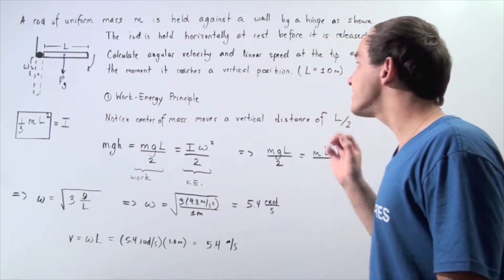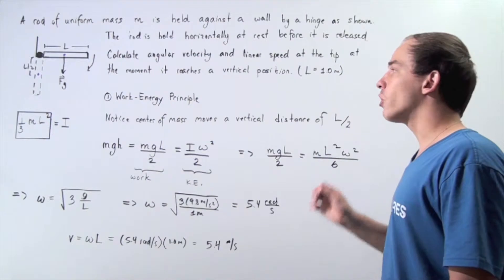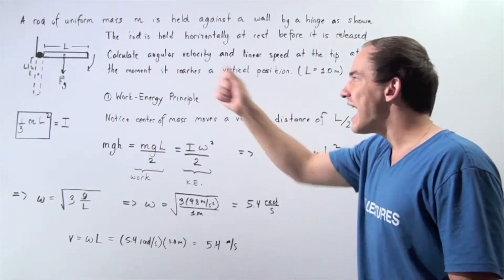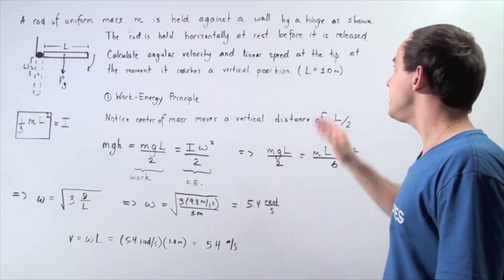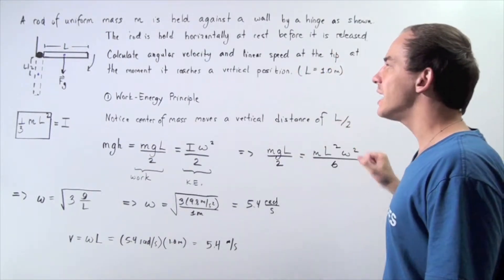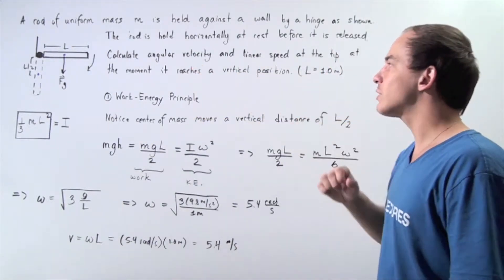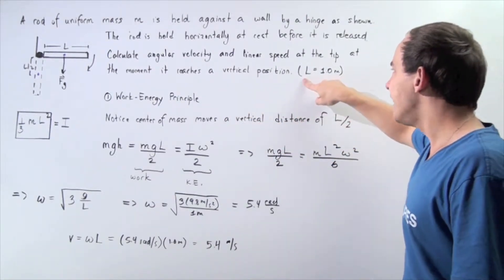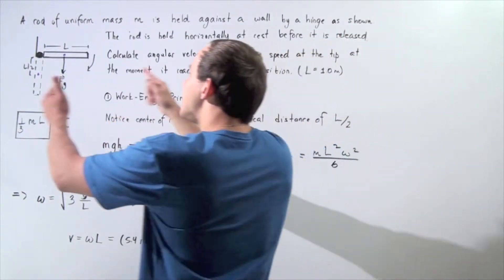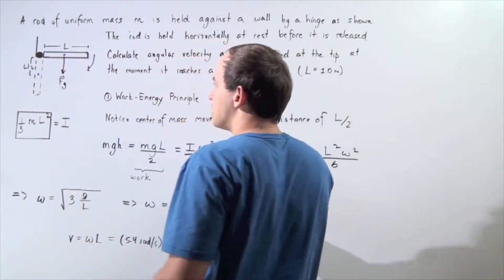Now, the rod is held horizontally at rest before it is released. We want to calculate the angular velocity and the linear speed at the tip of the rod at the moment the rod reaches a vertical position. We're assuming that l is one meter, so our length of the rod is one meter.